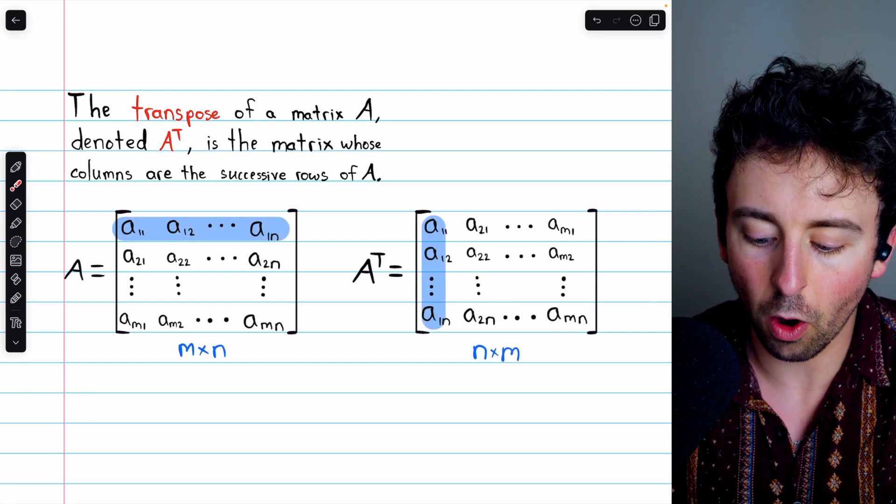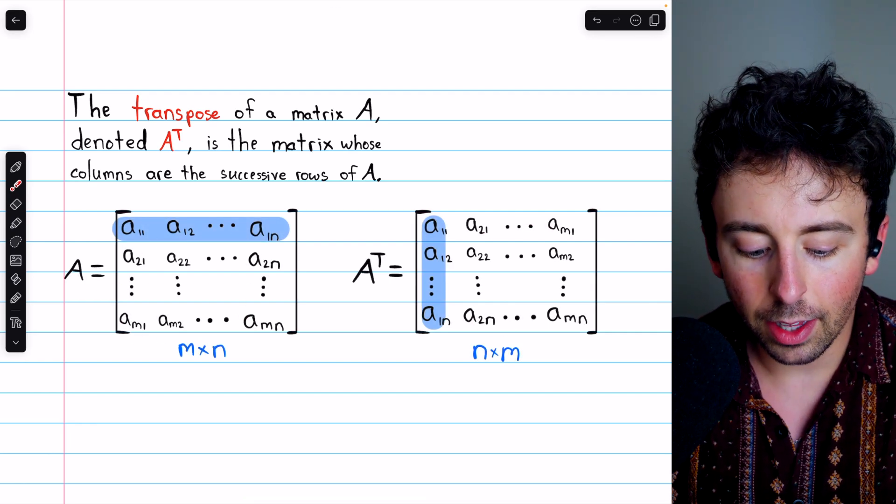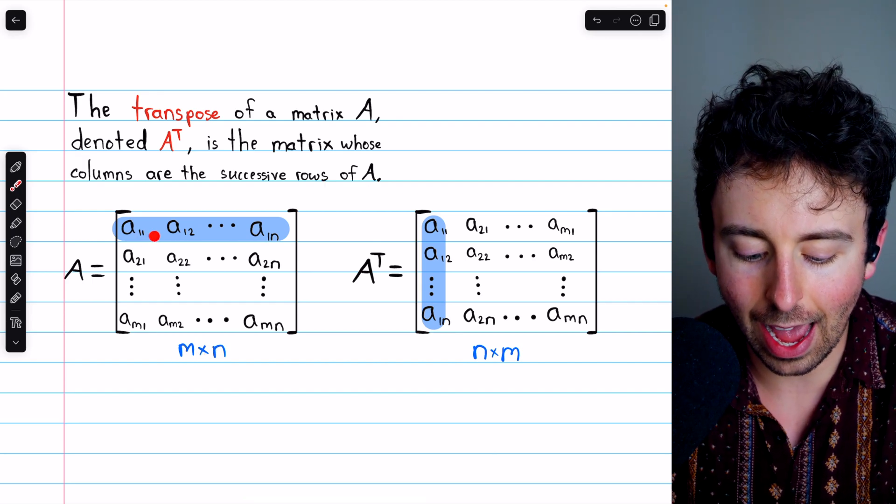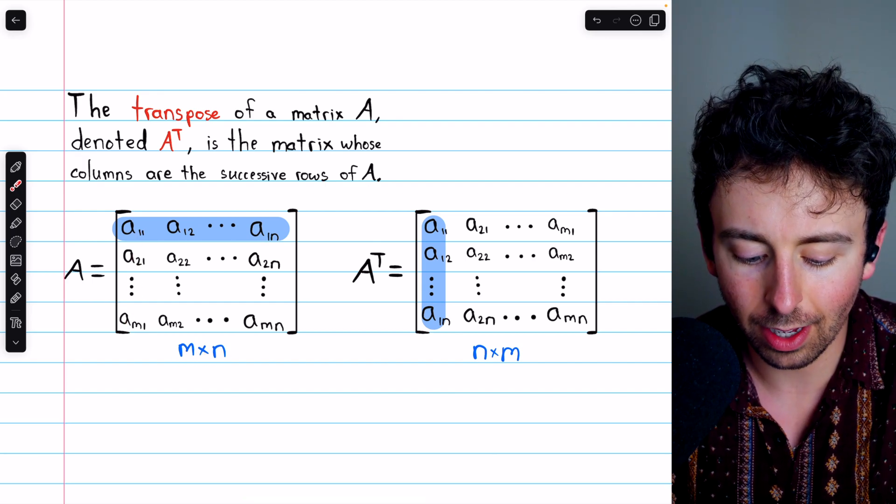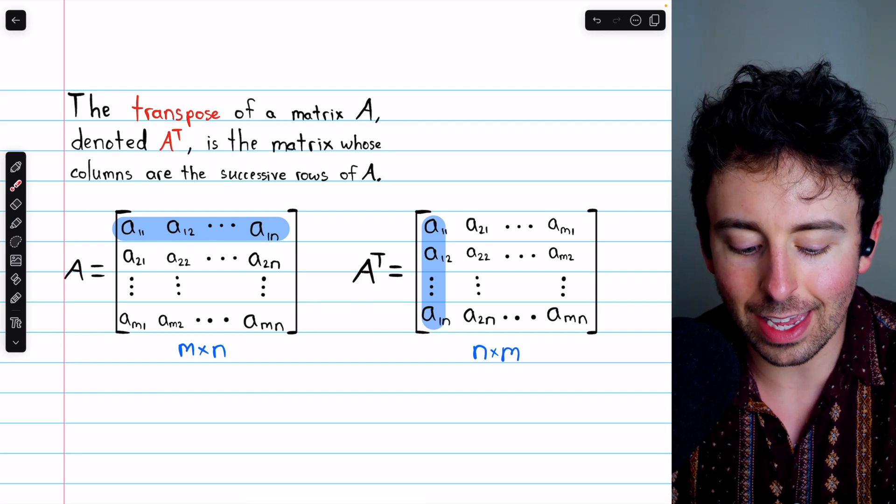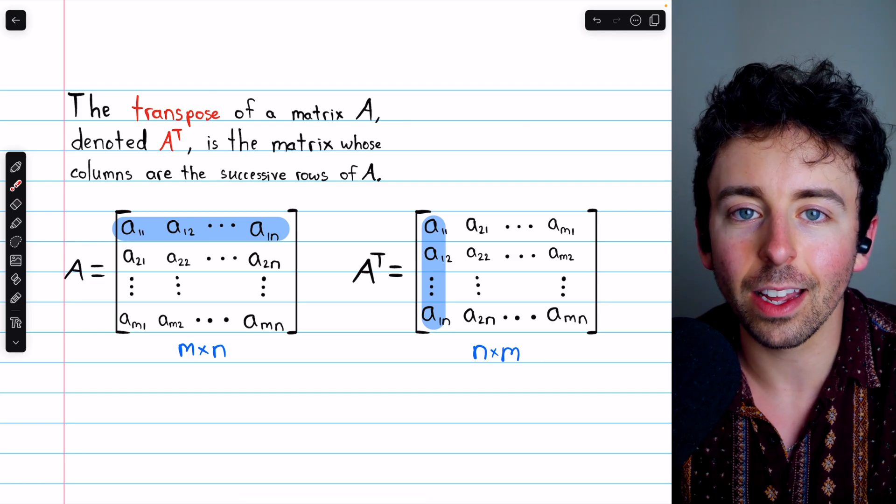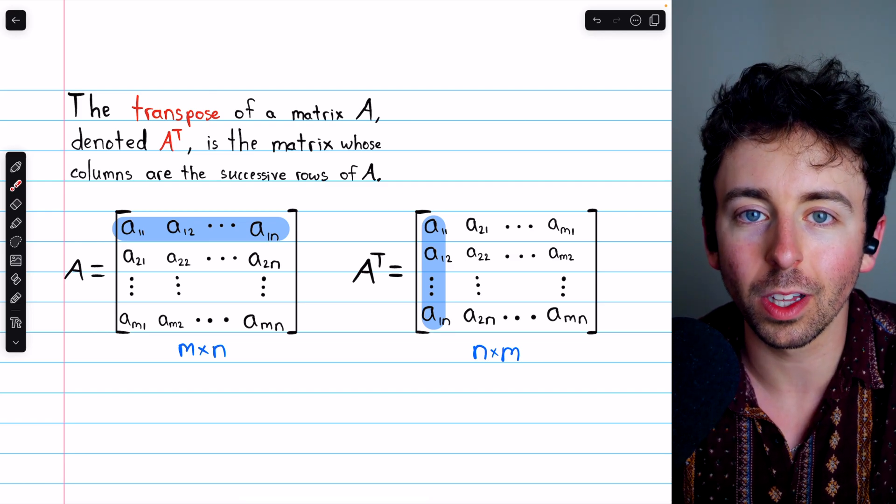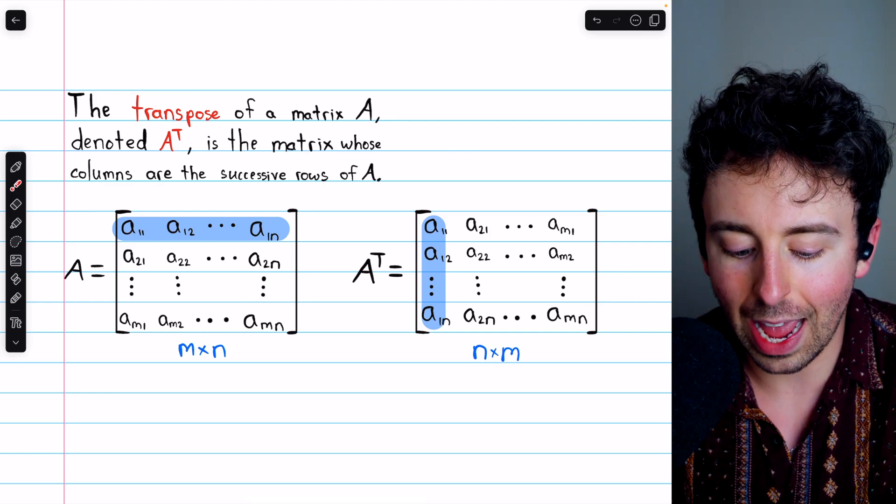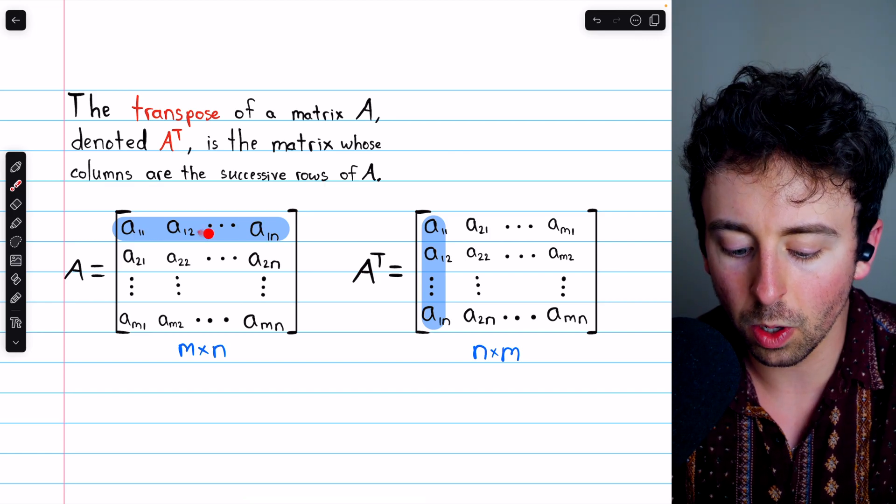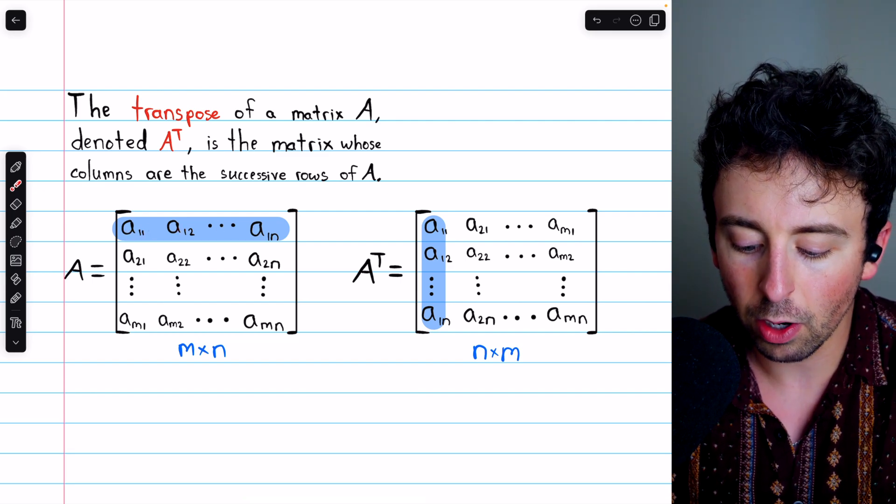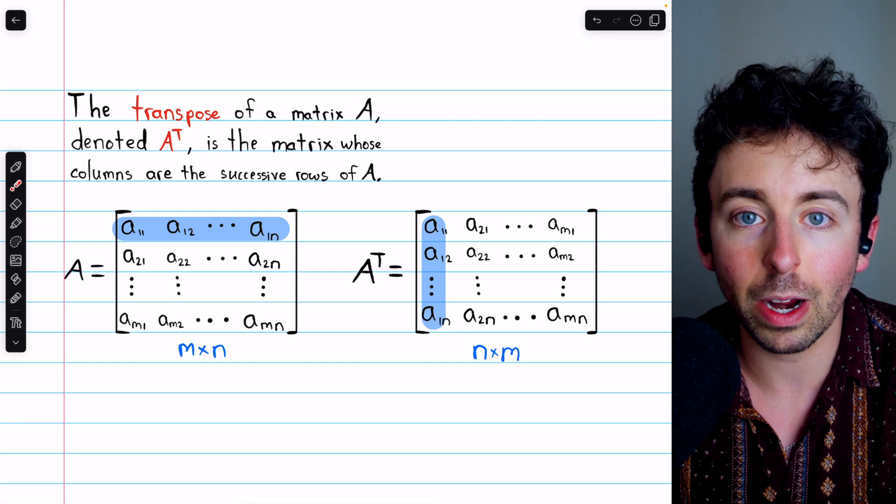Here's what it looks like with an arbitrary example. This is a matrix A. Its dimensions are m by n. It has m rows and n columns. To find A transpose, the rows of A will now play the role of the columns of A transpose. So you see this first row of A, A11, A12, all the way up through A1n. It's precisely those entries which make up the first column of A transpose.